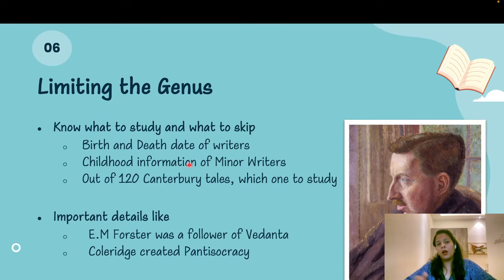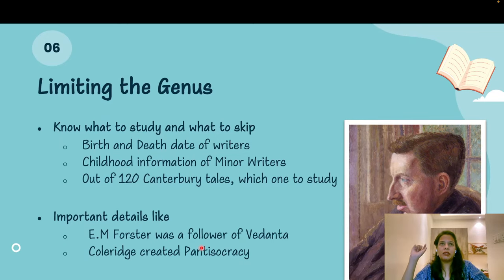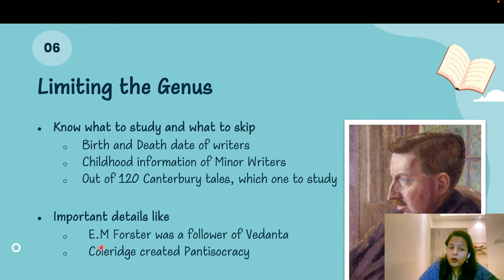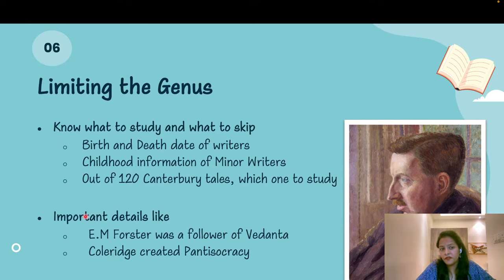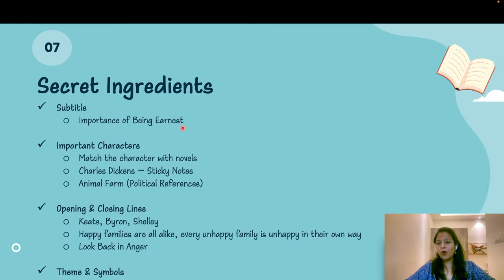However, important details like E.M. Forster being a follower of Vedanta, or Coleridge creating a society called Pantisocracy — which is also referenced in Book Two of Paradise Lost where Lucifer discusses it — are things you must know. If you don't know these important details, there's a high chance you'll get those questions wrong. So you need to know precisely what to study and what to skip.